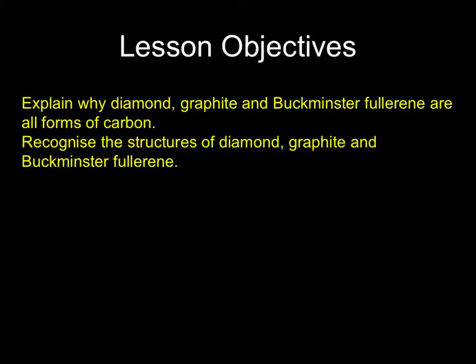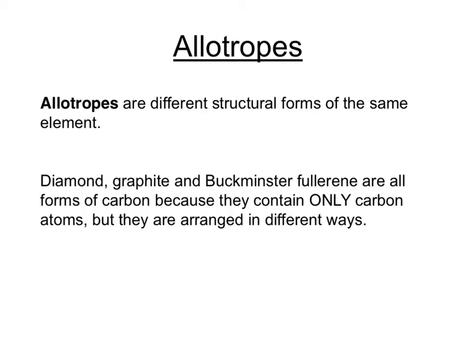The first thing we must do is to know about the different forms of carbon and to be able to recognise which structure is which. Diamond, graphite and Buckminsterfullerene are all forms of the same element, carbon. In other words, they all consist of only carbon atoms, but those carbon atoms are arranged in different structures. These different structural forms of the same element are called allotropes.